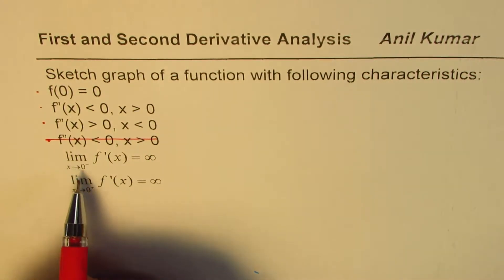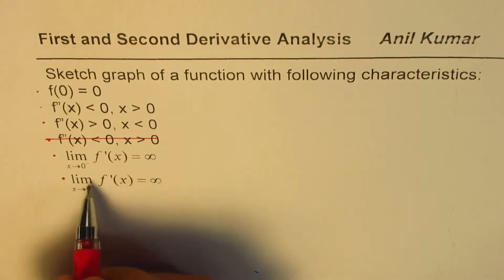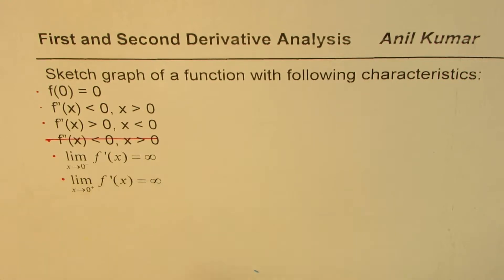Then we are given the limit of the derivative of the function as x approaches 0 from the left side is positive infinity, and limit when x approaches 0 from the right side for the derivative of the function is positive infinity. So from both sides the derivative is positive infinity.